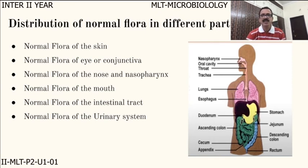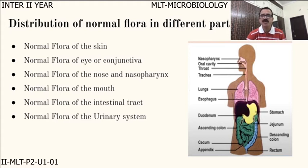Coming to the distribution of normal flora in different parts of the human body. The areas covered include: normal flora of the skin, normal flora of the eye or conjunctiva, normal flora of the nose and nasopharynx, normal flora of the mouth, and normal flora of the intestinal tract and urinary system.